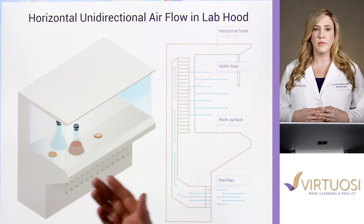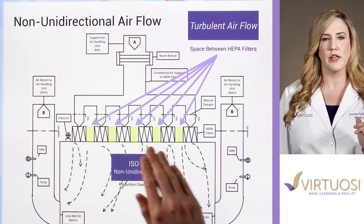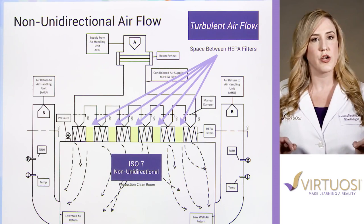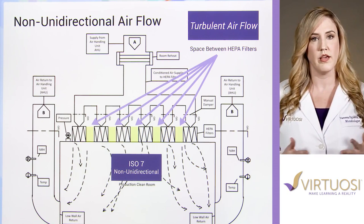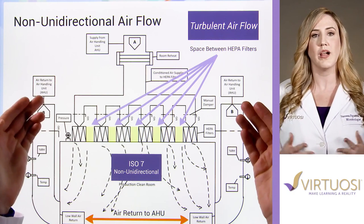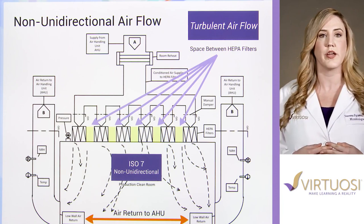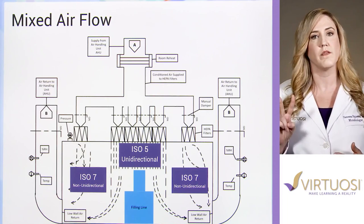Unidirectional airflow can be either vertical or horizontal depending on the work to be performed. Non-unidirectional airflow is created by having HEPA filters not adjacent to each other, with ceiling space where there are no filters. Non-unidirectional airflow is also referred to as turbulent airflow. In zones surrounding ISO 5 and preparatory areas such as ISO 8, the principal means of particulate control is via dilution. The nature of turbulent airflow means that particles can move in multiple directions. Mixed airflow is a combination of the two types in the same manufacturing space.